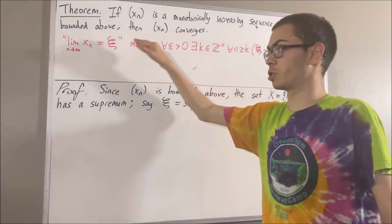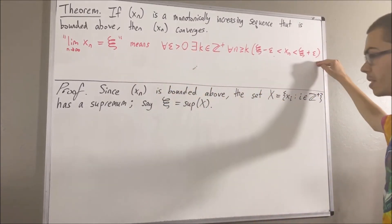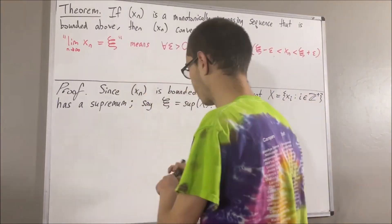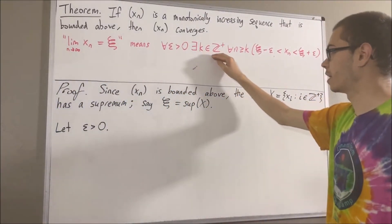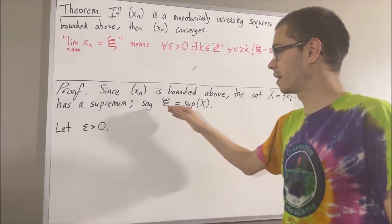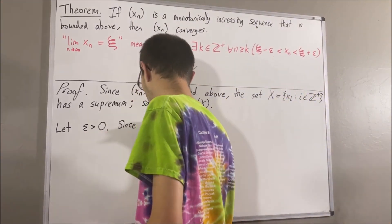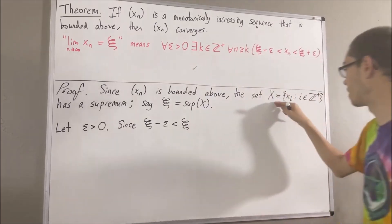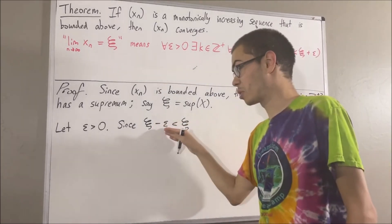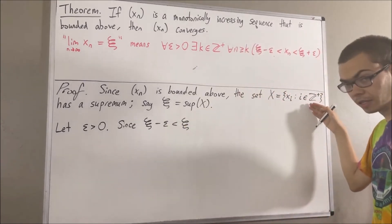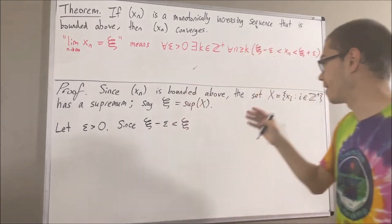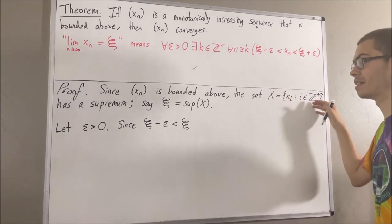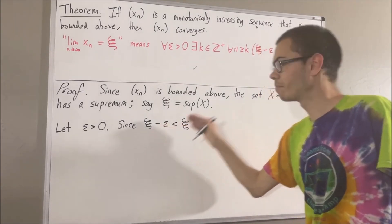Now, we're going to prove that our sequence converges to psi. To do that, all we need to do is prove this statement. Since we're trying to prove a statement about every epsilon greater than zero, let's give ourselves an arbitrary epsilon greater than zero. From here, we want to find a positive integer k such that this is true. Notice that psi minus epsilon is less than psi, which means psi minus epsilon is smaller than the least upper bound of this set. Therefore, psi minus epsilon cannot be an upper bound of this set, meaning there is some element in this set that is strictly greater than psi minus epsilon. I'll call that element x sub k.